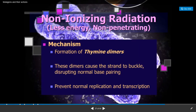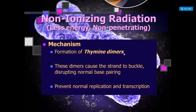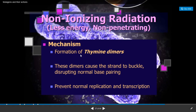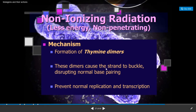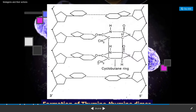Non-ionizing radiations cause mutations by resulting in the formation of thymine-thymine dimers. When adjacent thymine-thymine nucleotides are present in a DNA molecule and that DNA is exposed to ultraviolet light, thymine dimers are formed. These dimers cause the strand to buckle, disturbing normal base pairing, and prevent normal replication and transcription.